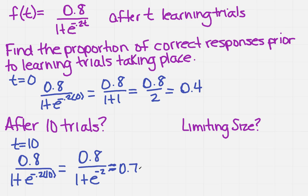Now this last question about the limiting size. In order to do that, you have to go back to the growth model standard formula. If you don't recall that, it is f of t equals c over 1 plus ae to the minus bt. Remember, c represents the limiting size.